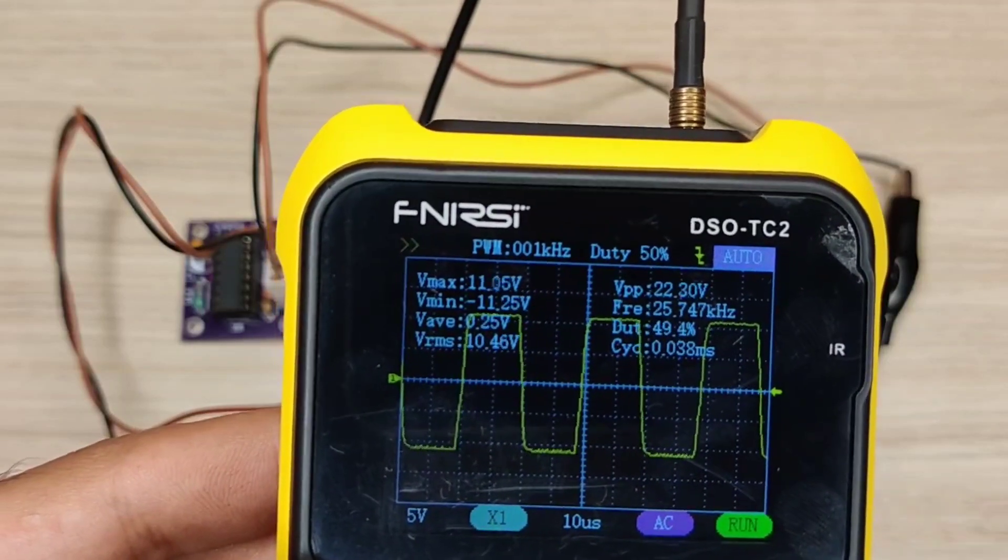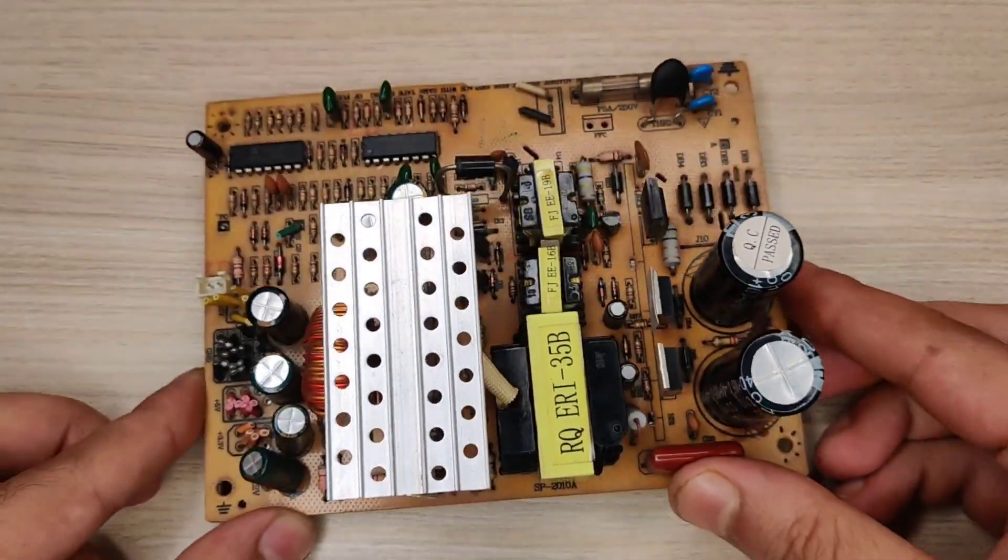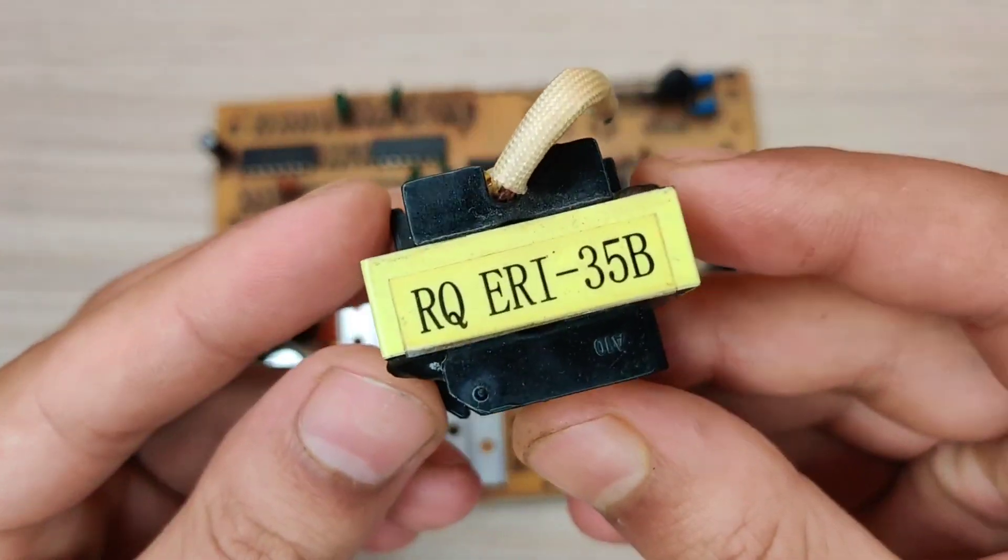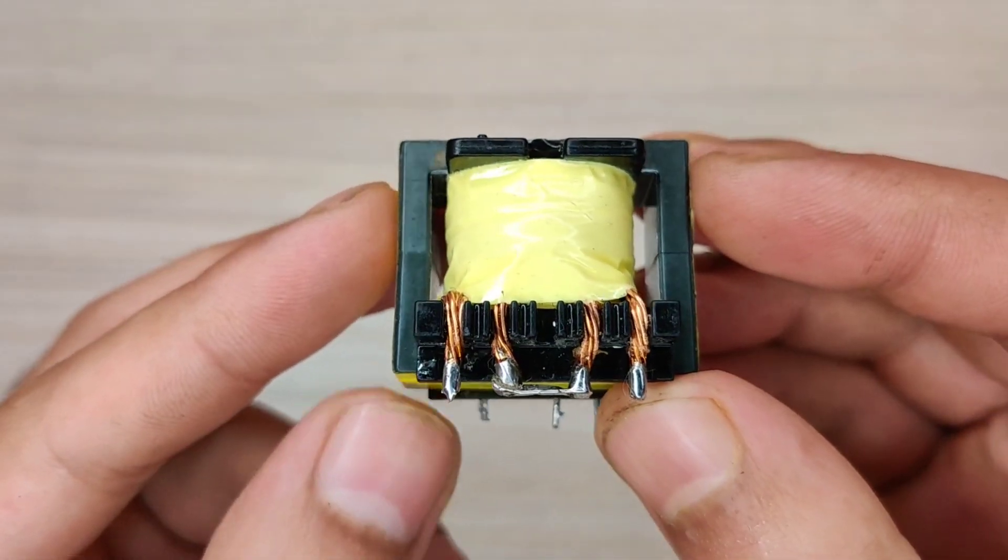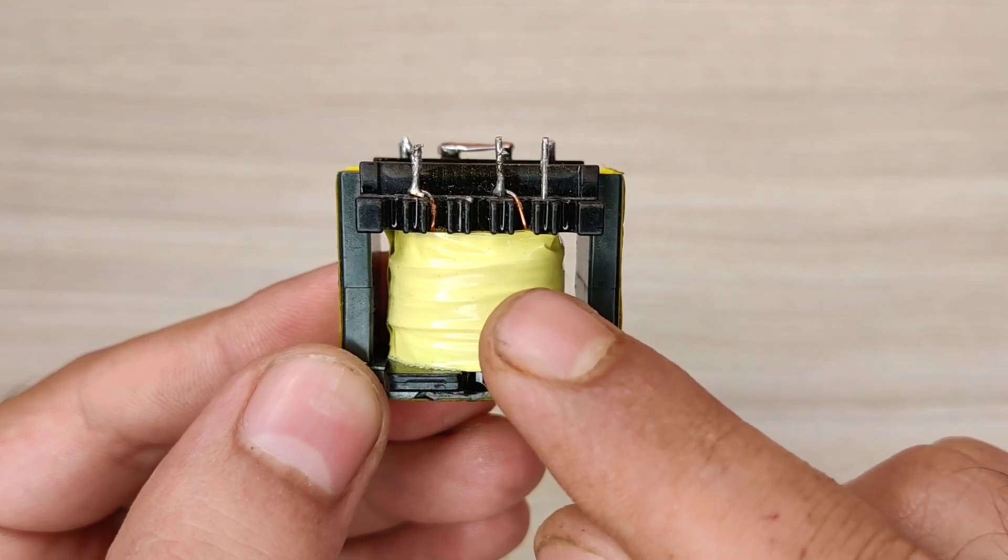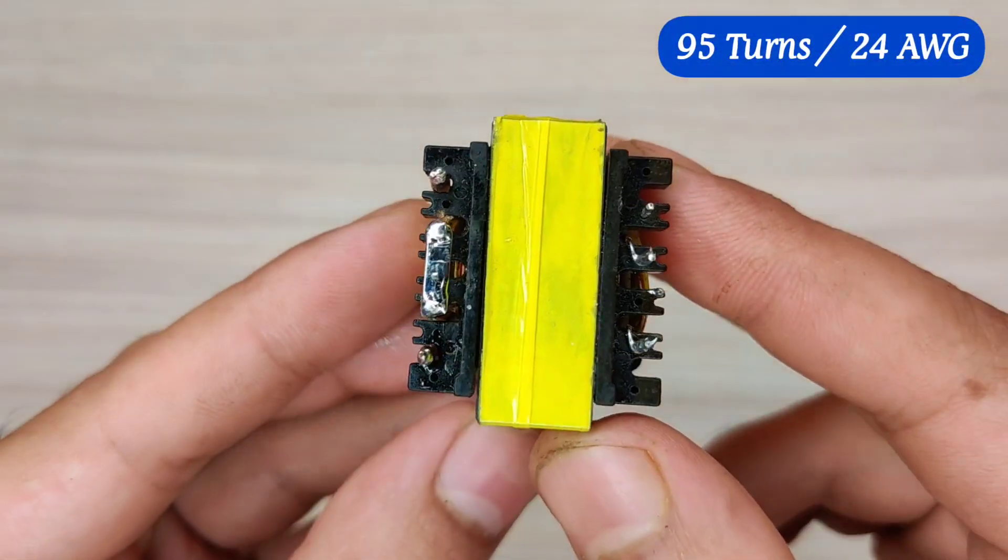Now let's move to the next part. From this ATX board you can get this pulse transformer which you need to rewind to get high output power. I have already rewound this transformer with primary winding of 3 and 3 turns and secondary winding of 95 turns to get about 230 volts.